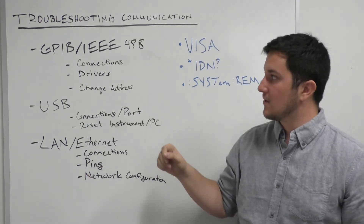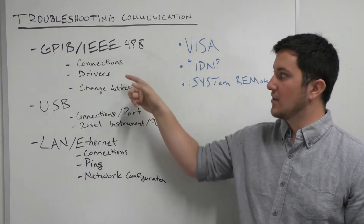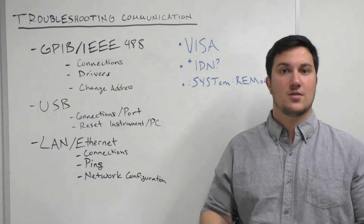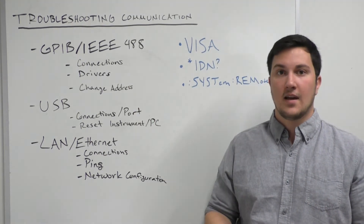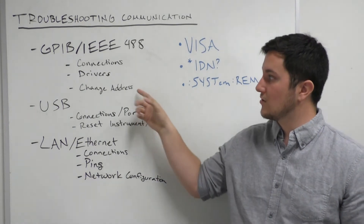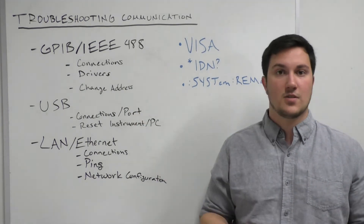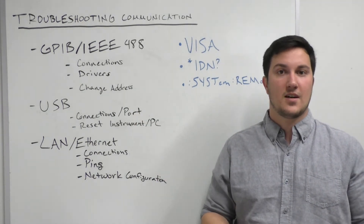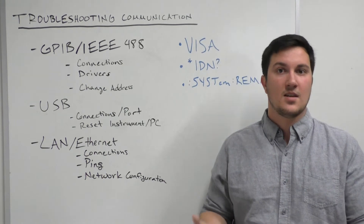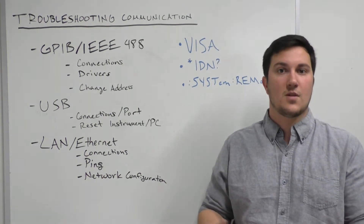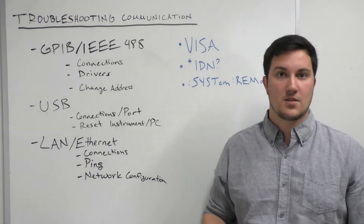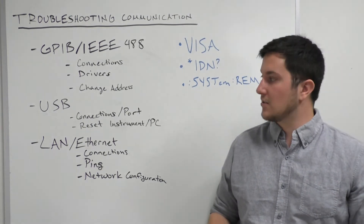For GPIB specifically, you want to make sure that any drivers for your adapters or your instruments are installed. If that doesn't fix your connection issues, you can also change your instrument address. Usually this would be if you have two instruments on the same address — it'll cause some communication issues, so you want to make sure those are different if you have multiple instruments on the same GPIB connection.